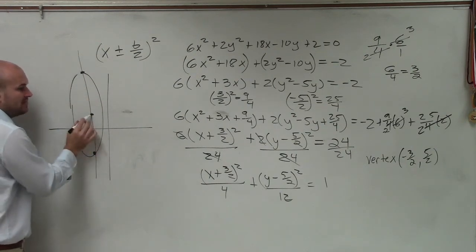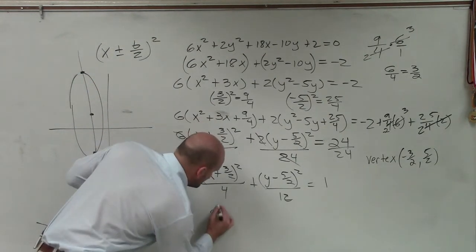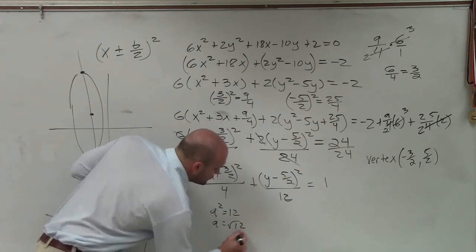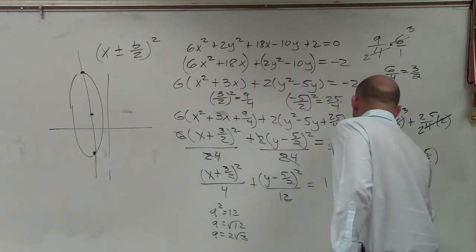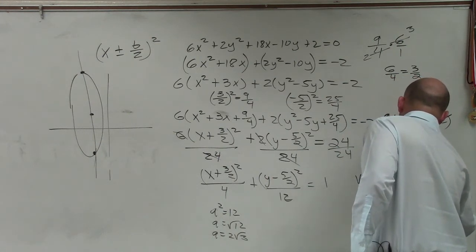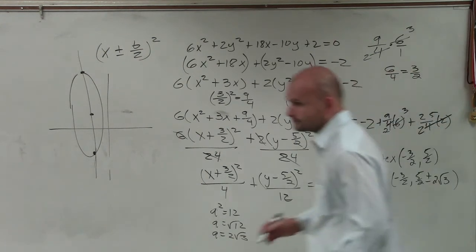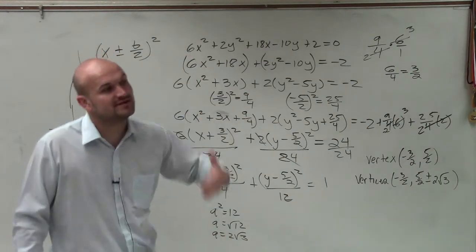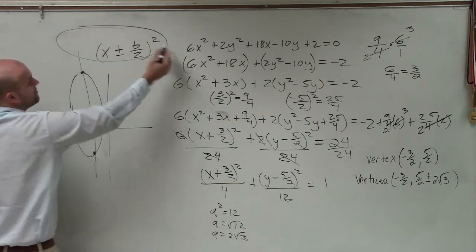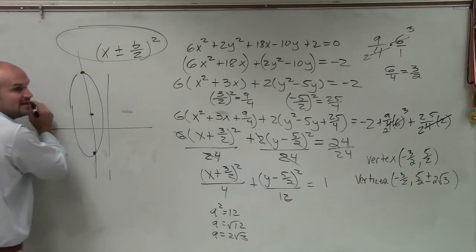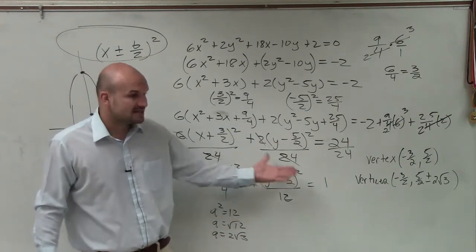So what is my a? Well, a squared equals 12. So therefore, a equals the square root of 12, right? Which we can reduce to a equals 2 square root of 3. So now, to find my vertices, I can just say negative 3 over 2 comma 5 halves plus or minus 2 square root of 3. Because you're adding and subtracting to the y coordinate, because it's a major axis of symmetry that's vertical. So you've got to add them up and down. If this was an ellipse that looked like this, then you would add and subtract to the x coordinate, right? Because the major axis would be horizontal. So it all depends on what this formula is, and if it's a horizontal or vertical. Does that make sense, the distinction?